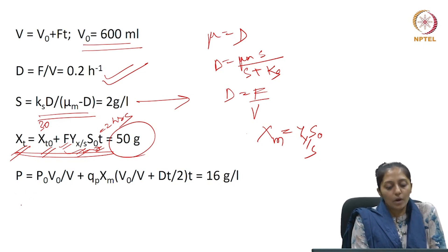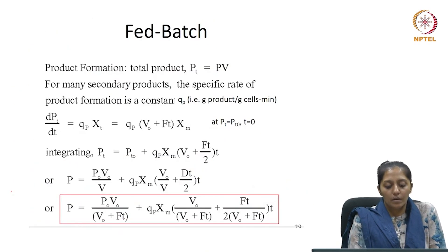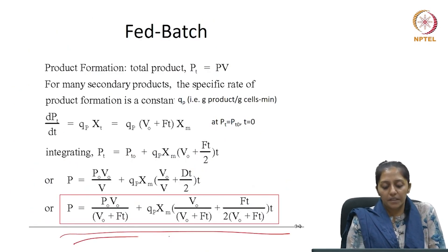Now, they have also asked us to calculate the product concentration, which is determined here. We know V₀, we know F, we know t, q_p has been given, X_m we have calculated as 50 grams per liter.